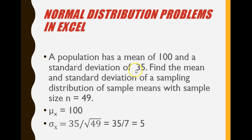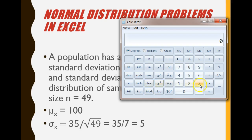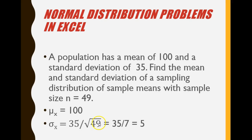The standard deviation will be the population standard deviation of 35 divided by the square root of the sample size. 35 divided by the square root of 49. The square root of 49 is 7. The population standard deviation divided by the square root of the sample size. 35 divided by 7 equals 5.